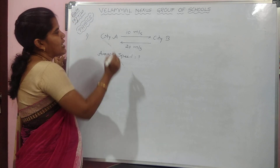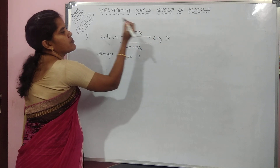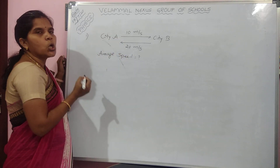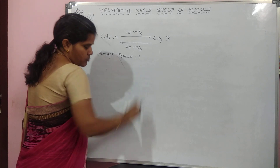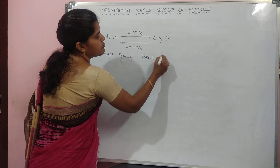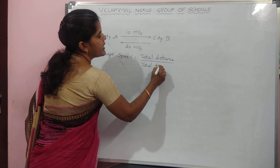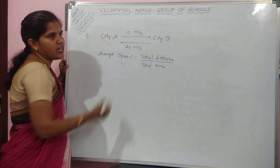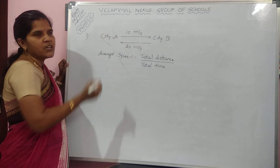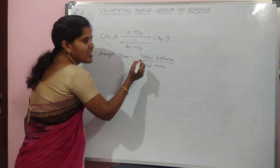A train travels from city A to city B with 10 m per second constant speed, and returns back from city B to city A with a constant speed of 20 m per second. Find out the average speed. The average speed formula is total distance by total time. In the given data, total distance is not given and time is also not given. So we need to find out both distance and time.